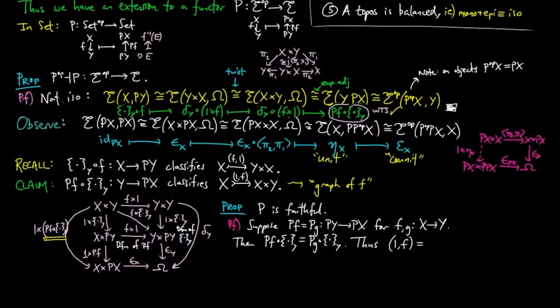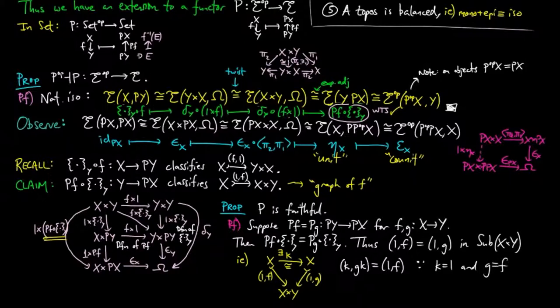Thus, the graph of f is equal to the graph of g as sub-objects of x cross y. Thus, there exists an automorphism k on x such that k composed with g composed with k is equal to 1f. Then by projection, we see that k is equal to 1, and thus f is equal to g as desired.